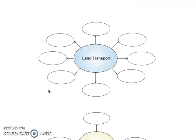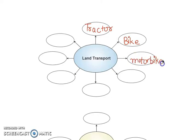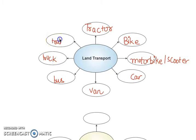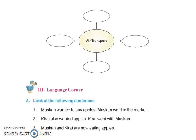Land transport — yaani ki jeda dharti utte chalan wale awajai de saadhan ne: tractor, bike/motorbike, scooter, car, van, bus, truck, train.